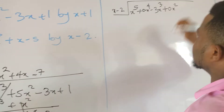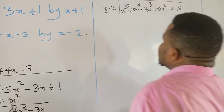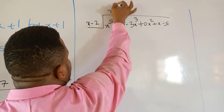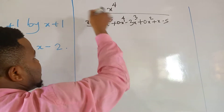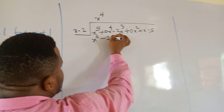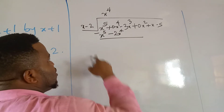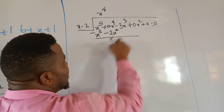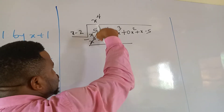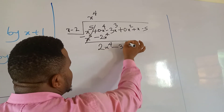So we have x to the 5th, plus 0x to the 4th, minus 3x cubed, plus 0x squared, plus x, minus 5 divided by x minus 2. x goes into x to the 5th giving x to the 4th. x to the 4th times x is x to the 5th, and x to the 4th times negative 2 is minus 2x to the 4th. We draw a line, introduce minus — the x to the 5th cancels, and minus times negative 2x to the 4th gives plus 2x to the 4th. Bring down minus 3x cubed.